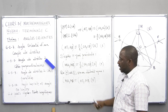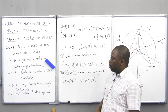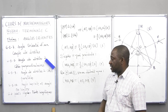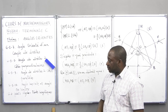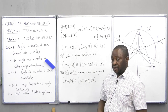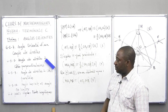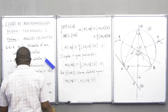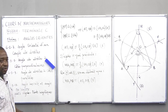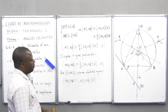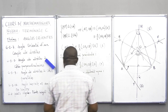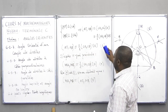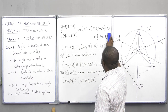Ces théorèmes vont nous permettre de faire beaucoup de démonstrations et de résoudre beaucoup d'exercices. Nous allons passer au point 6.2 : il s'agit des points alignés et des points cocycliques. Comment démontrer que des points sont alignés en utilisant l'outil des angles orientés, et comment démontrer que des points sont cocycliques en utilisant les angles orientés.